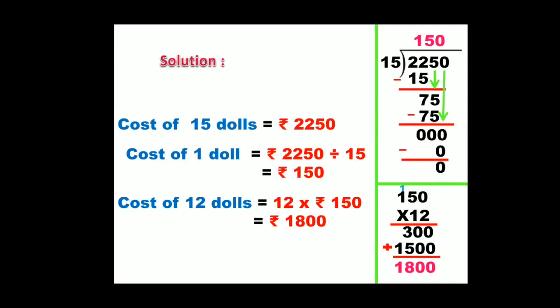Cost of 1 doll is equal to ₹2250 divide by 15. As we are going from many to 1, that is from 15 to 1, we divide. After division we will get the answer as ₹150.